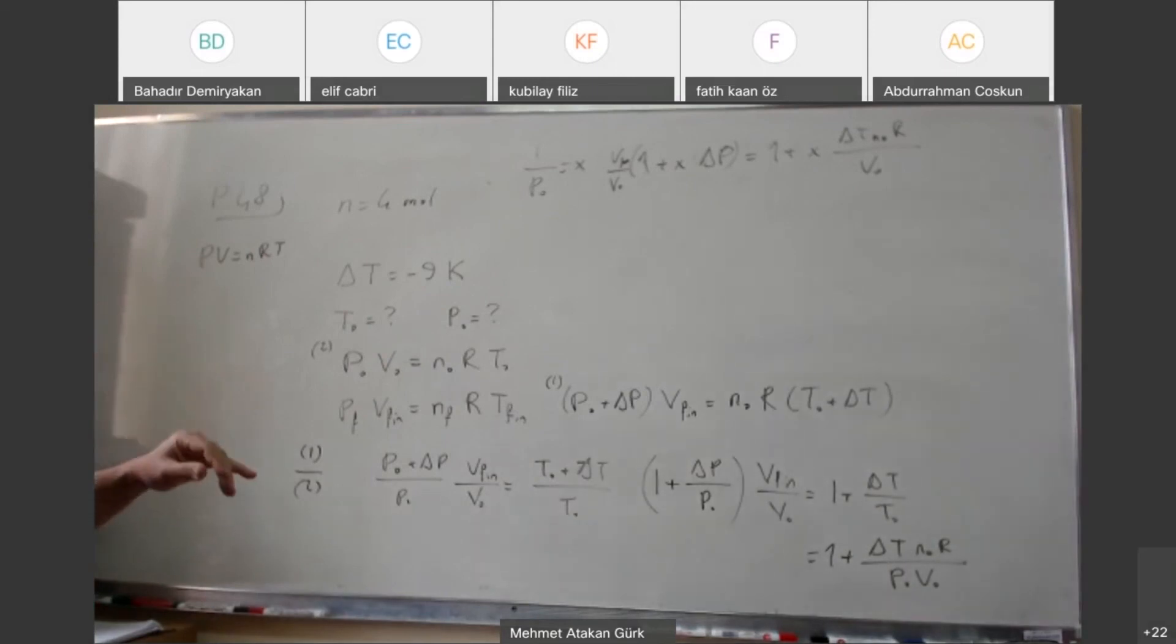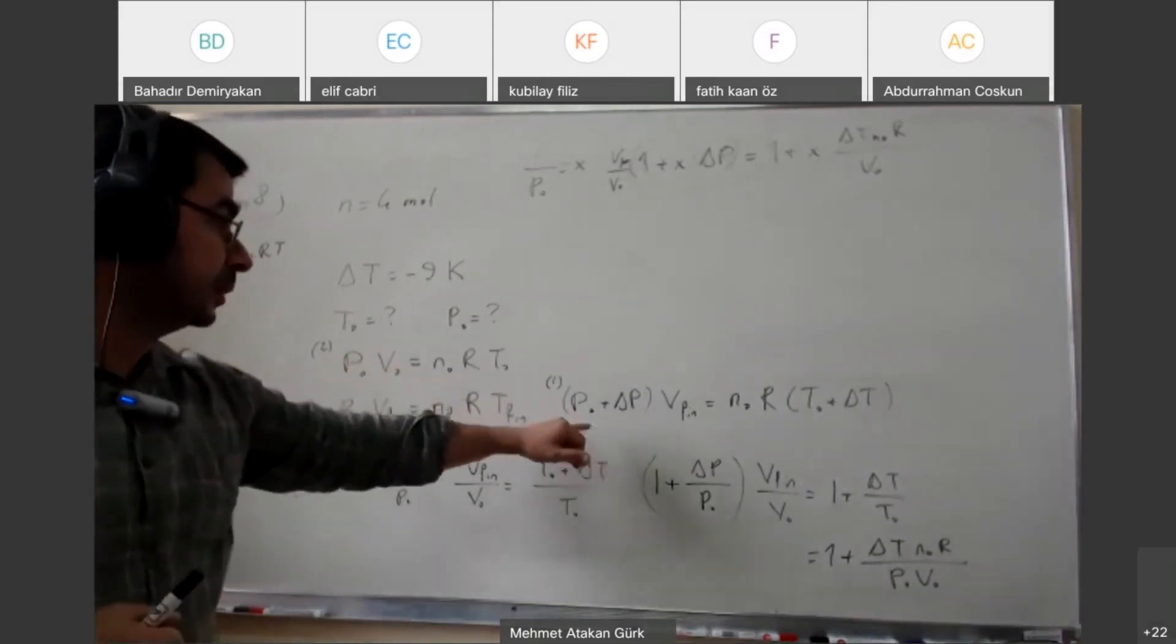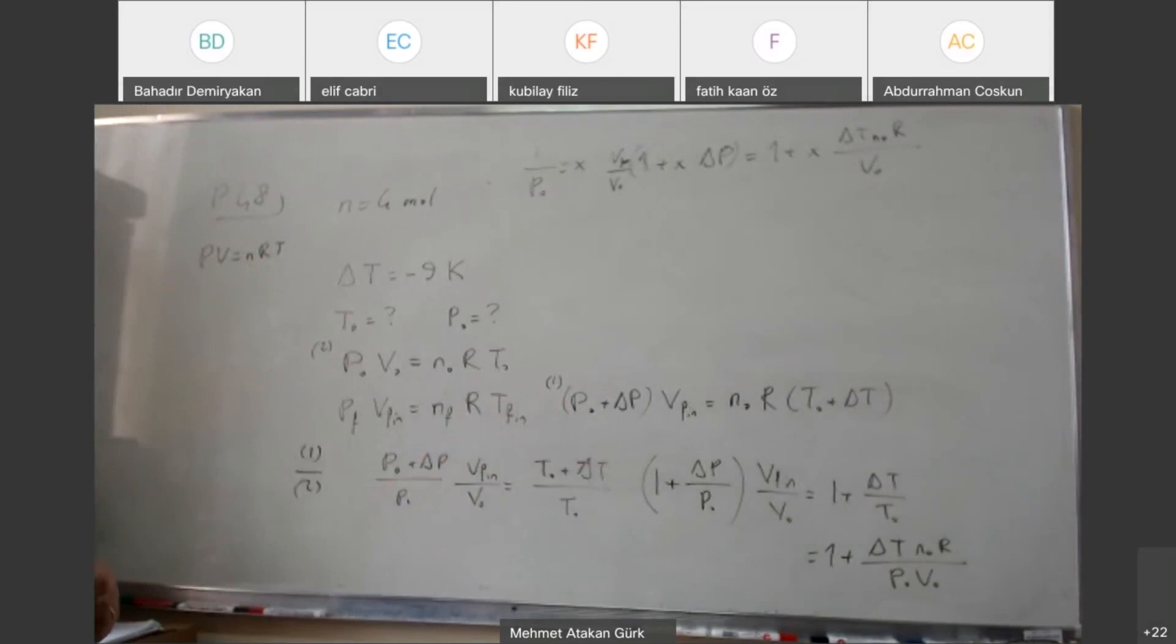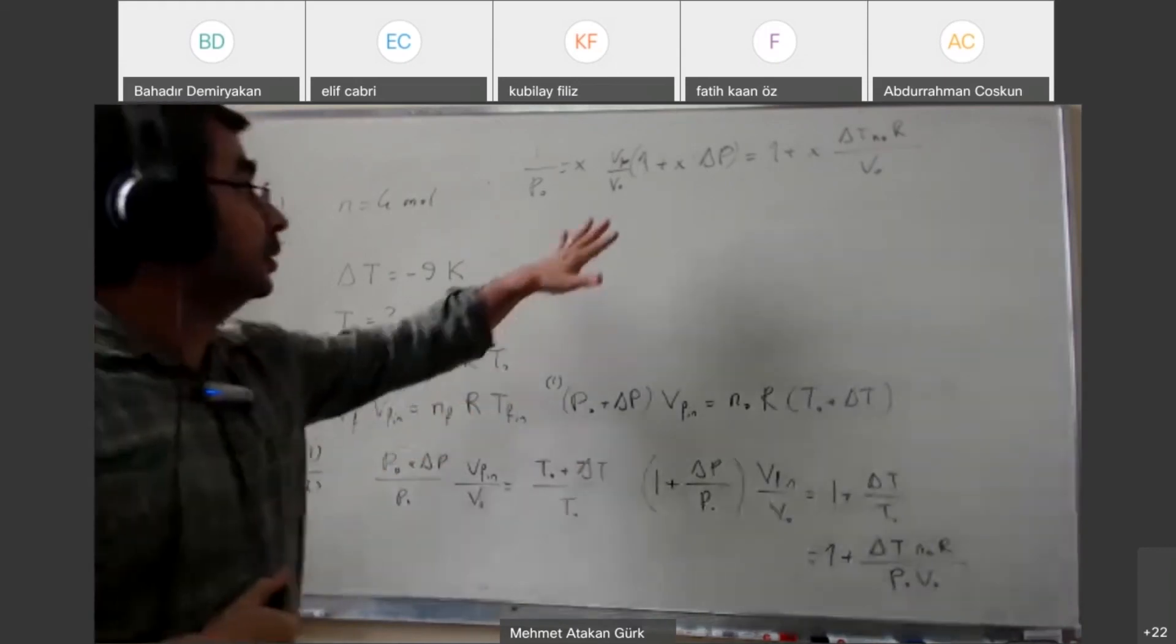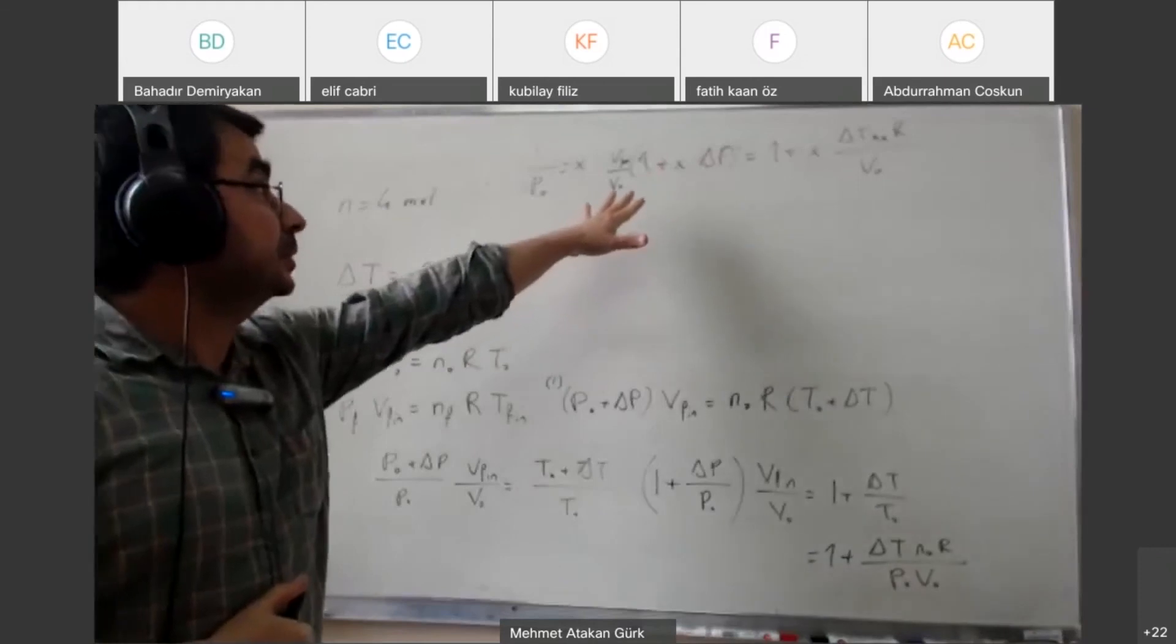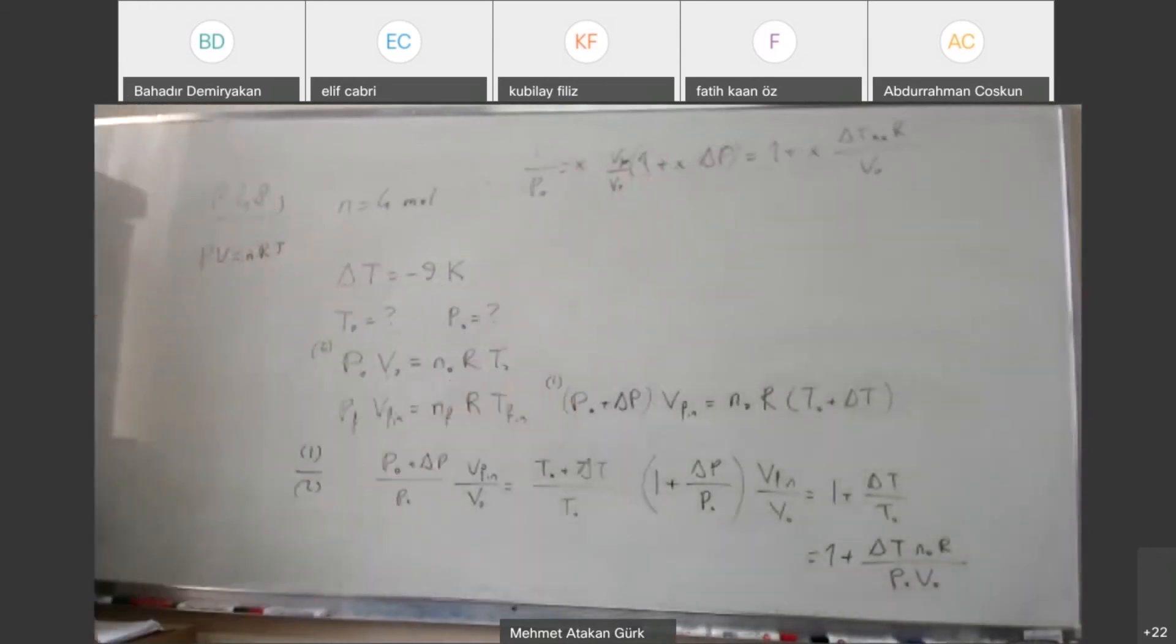But once you do, the meat of the problem is you write these equations down in terms of the variables you already know, and you get two equations, two independent equations for two unknowns, which means you can actually solve them. The rest actually can be done even by a computer and there isn't much benefit in keeping all the variables till the end.